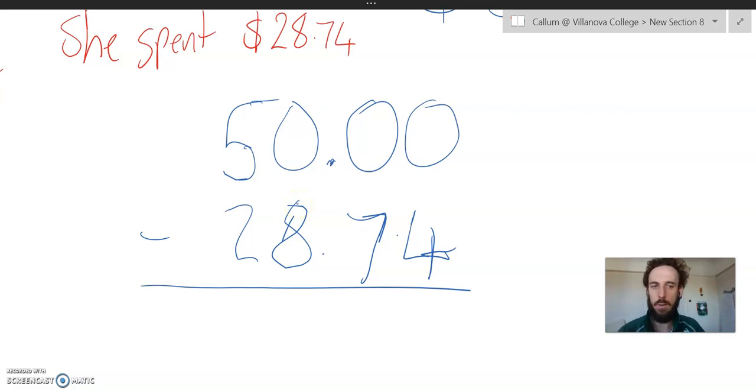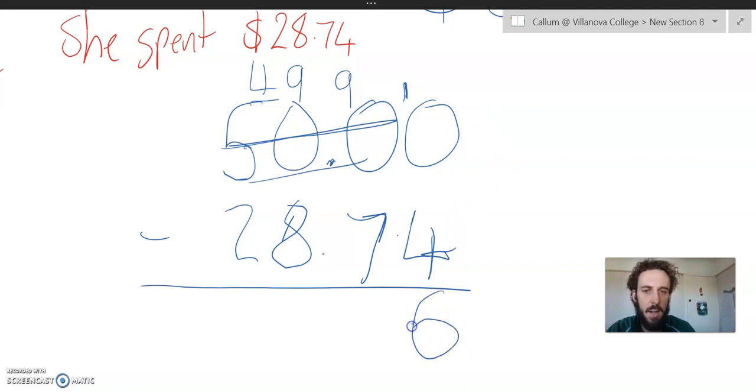If we wanted to borrow from here, we can't. So we know that we can take this 500. I'm looking at this number. And we can just minus 1 off that. So we can turn it into $4.99. And then the 1 that I've borrowed off 500 becomes 10 ones. So now all of a sudden, I'm doing 10 take away 4, which is 6. 9 take away 7, which is 2. 9 take away 8, which is 1. And 4 take away 2, which is 2.